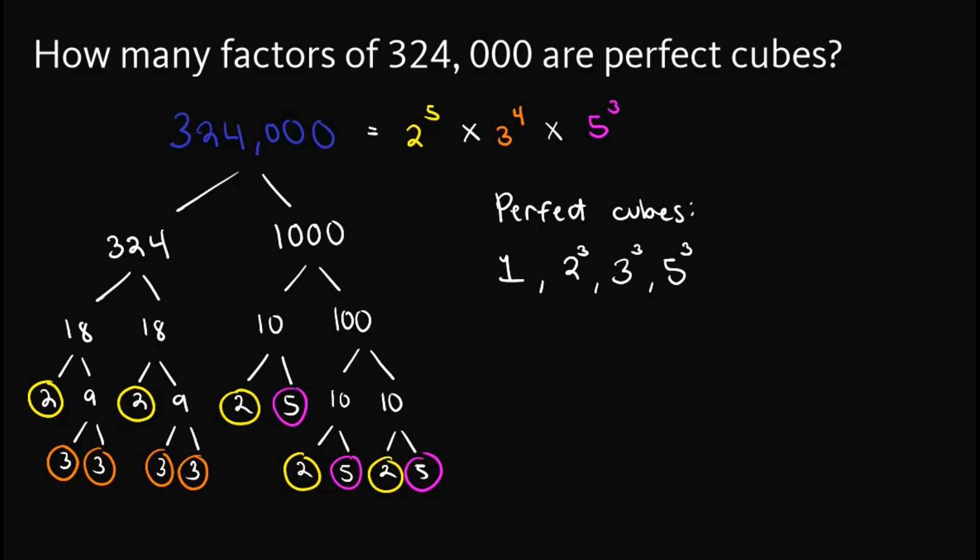Now, aside from this, we can also take their combinations. So we can take the combination of this one, and that is 2 cubed times 3 cubed, and we can also take the combination of 3 cubed and 5 cubed. So that would be 3 cubed times 5 cubed.